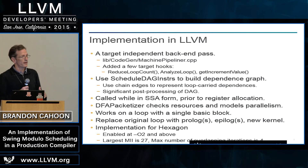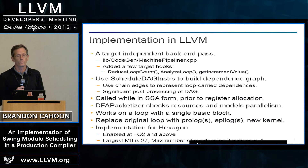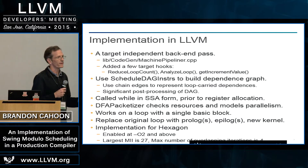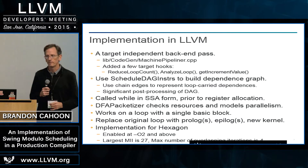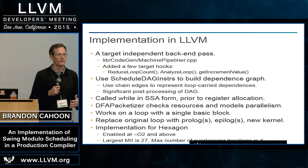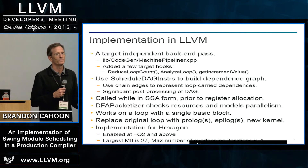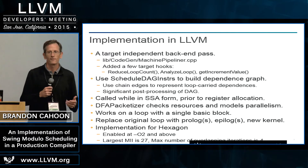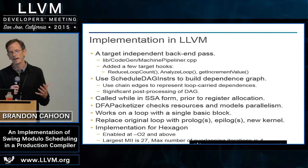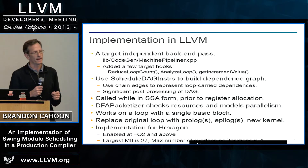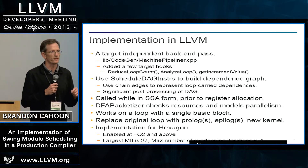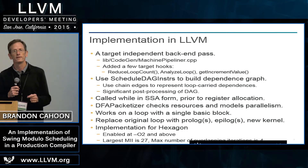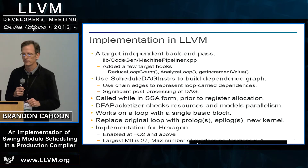We implement this using ScheduleDAGInstrs to create the dependence graph. The problem with that, of course, is that it creates a DAG which doesn't have cycles, and you really want to represent loop-carried dependences when you do software pipelining. So we had to change the graph a little bit, and we represent loop-carried dependences using chain edges, which the software pipeliner recognizes as representing a loop-carried dependence.